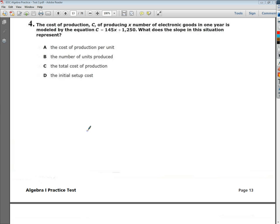The question says, the cost of production, defined as the variable C, of producing X number of electronic goods in one year is modeled by the equation C equals 145X plus 1,250. What does the slope in this situation represent?